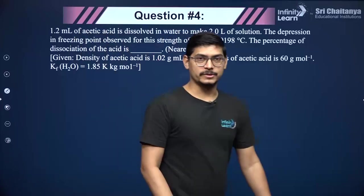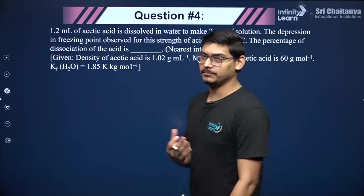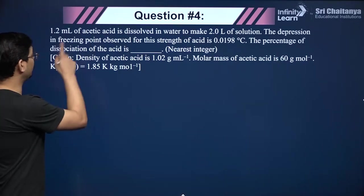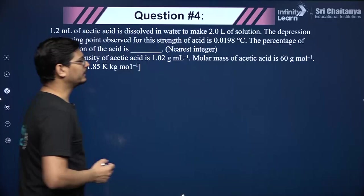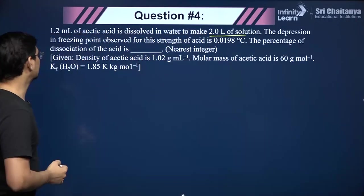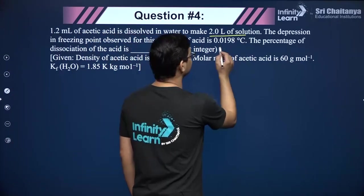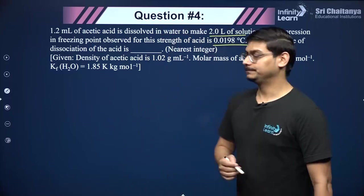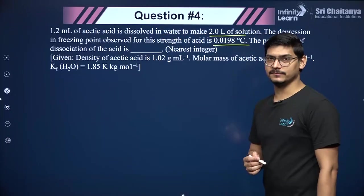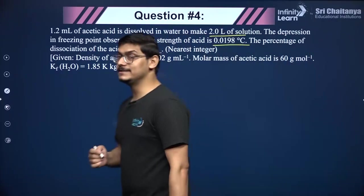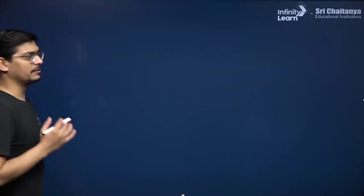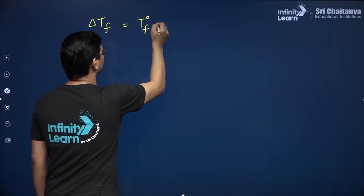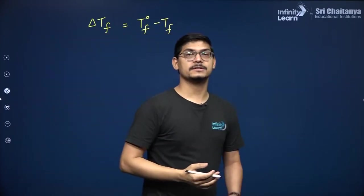Moving to the next question from Solutions — Van't Hoff factor and colligative properties are very important topics. The question: 1.2 mL of acetic acid is dissolved in water to make 2 liters of solution. The depression in freezing point observed is 0.0198°C. What is the percentage dissociation of the acid? Two things are involved: freezing point depression and Van't Hoff factor. The formula is ΔTf = i·Kf·m.